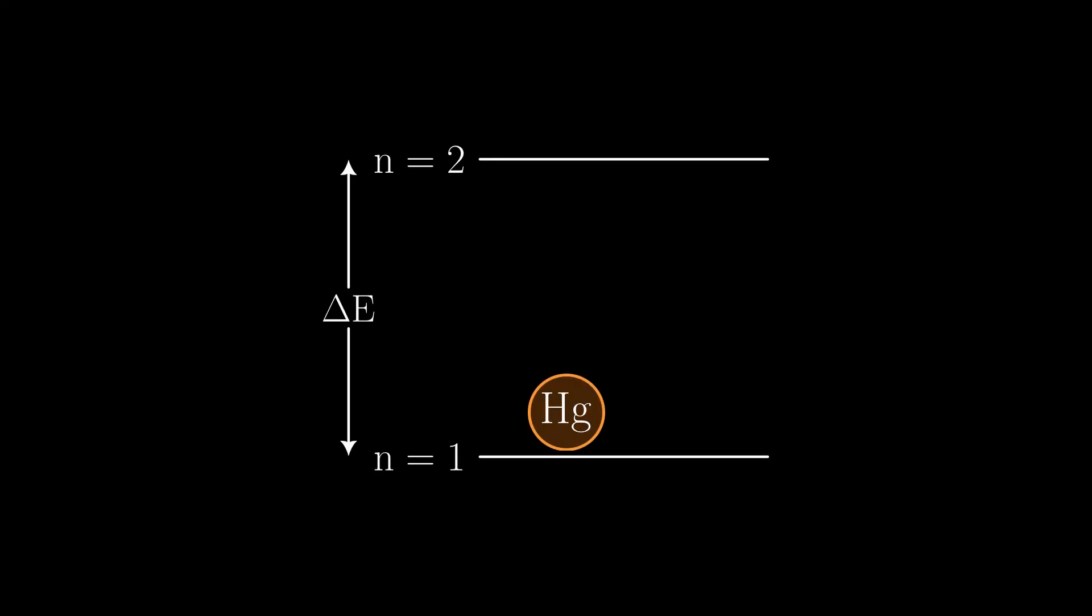So if the electron has a kinetic energy of delta E, which is 4.9 eV for the mercury atom, it boosts the mercury atom to the energy level n equals 2.